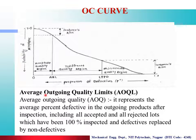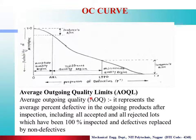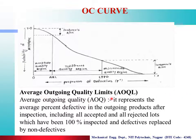Now, Average Outgoing Quality Limit — AOQ stands for Average Outgoing Quality. It represents the average percent defective in the outgoing product after inspection, including all accepted lots and all rejected lots which have been 100% inspected and defectives replaced by non-defectives. That is the Average Outgoing Quality Limit.